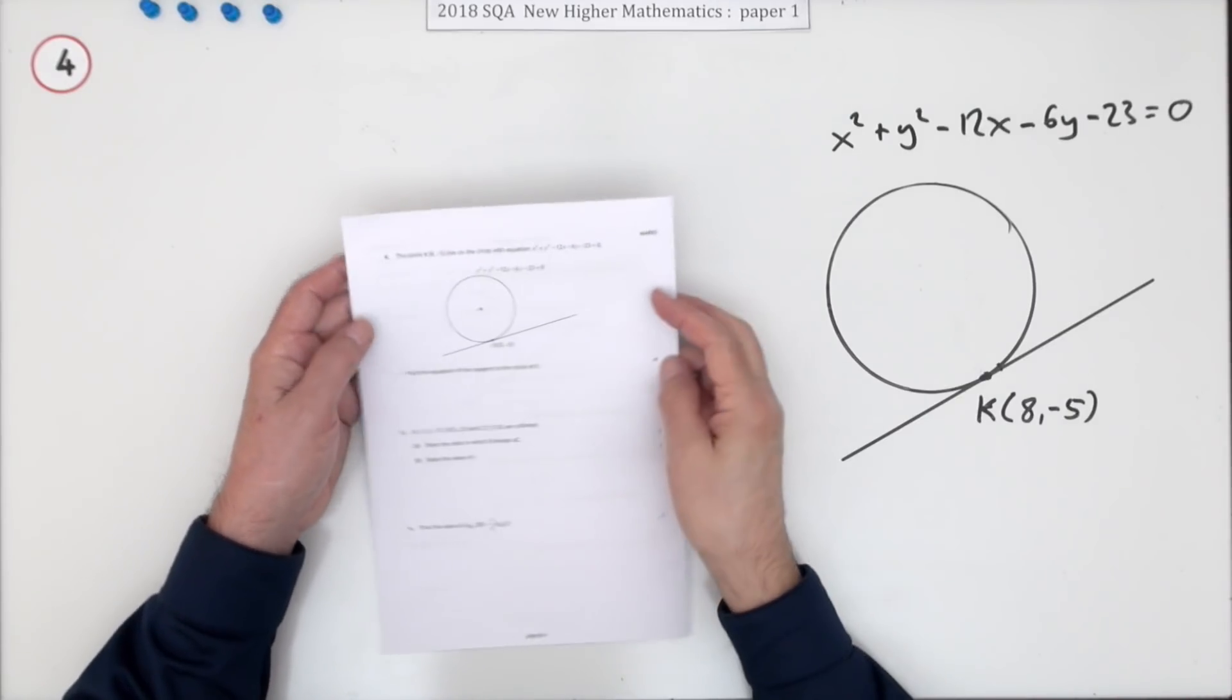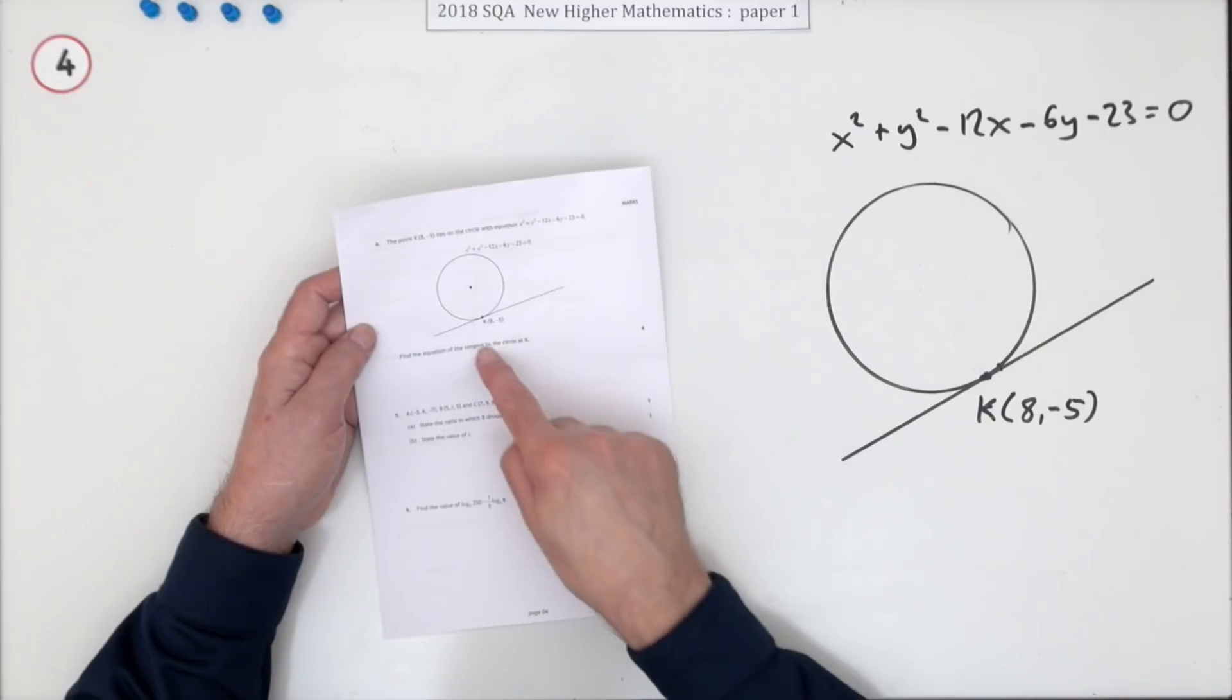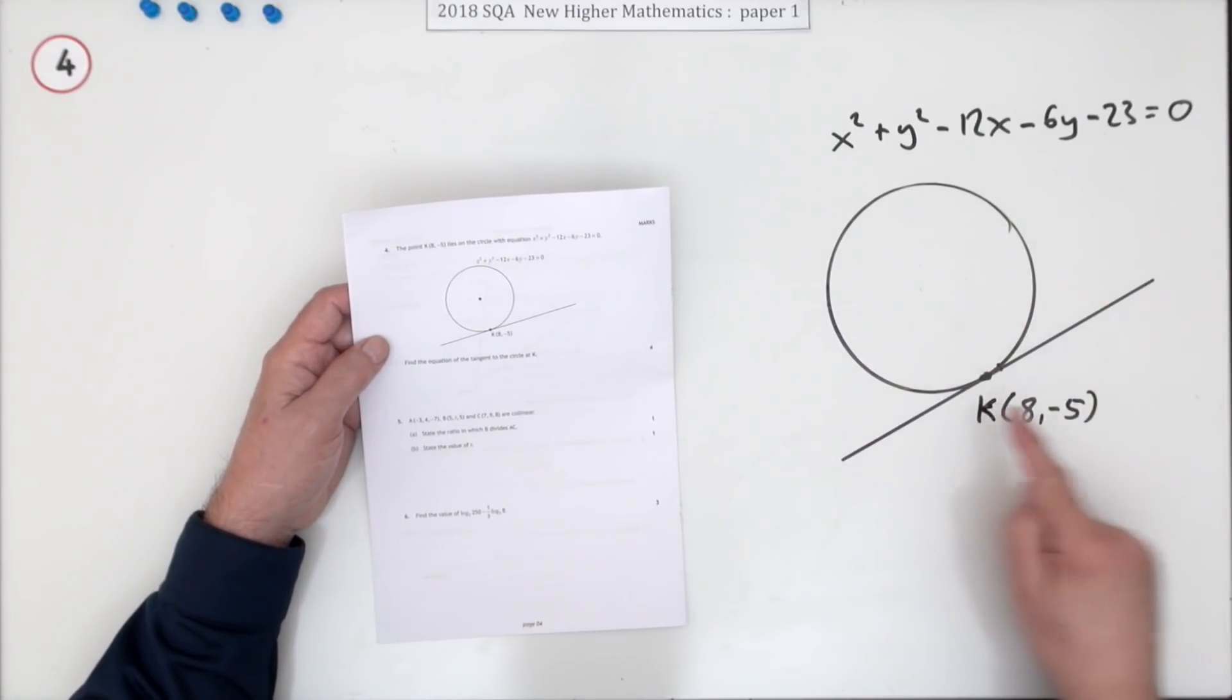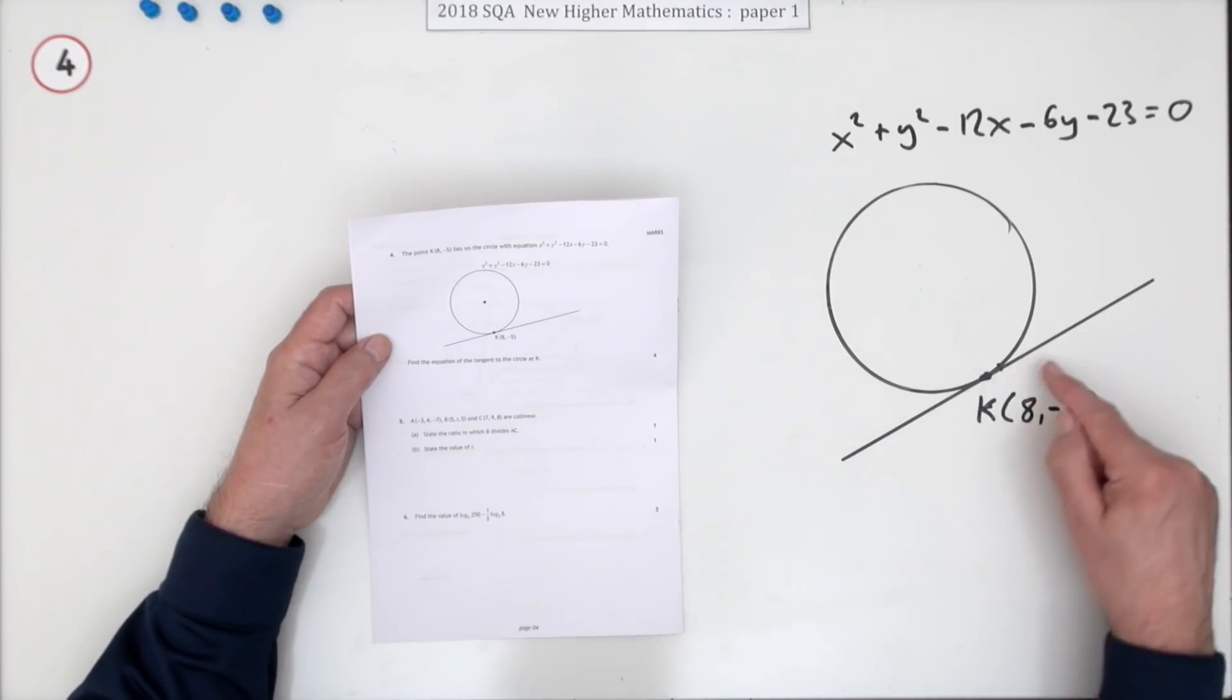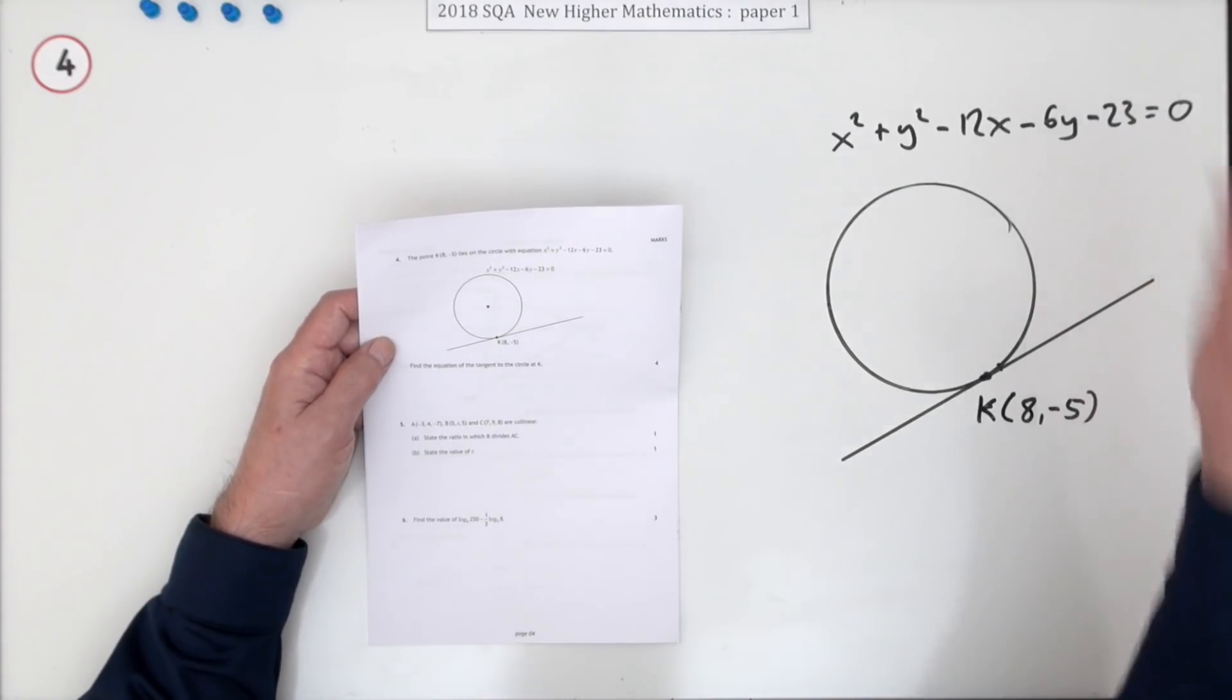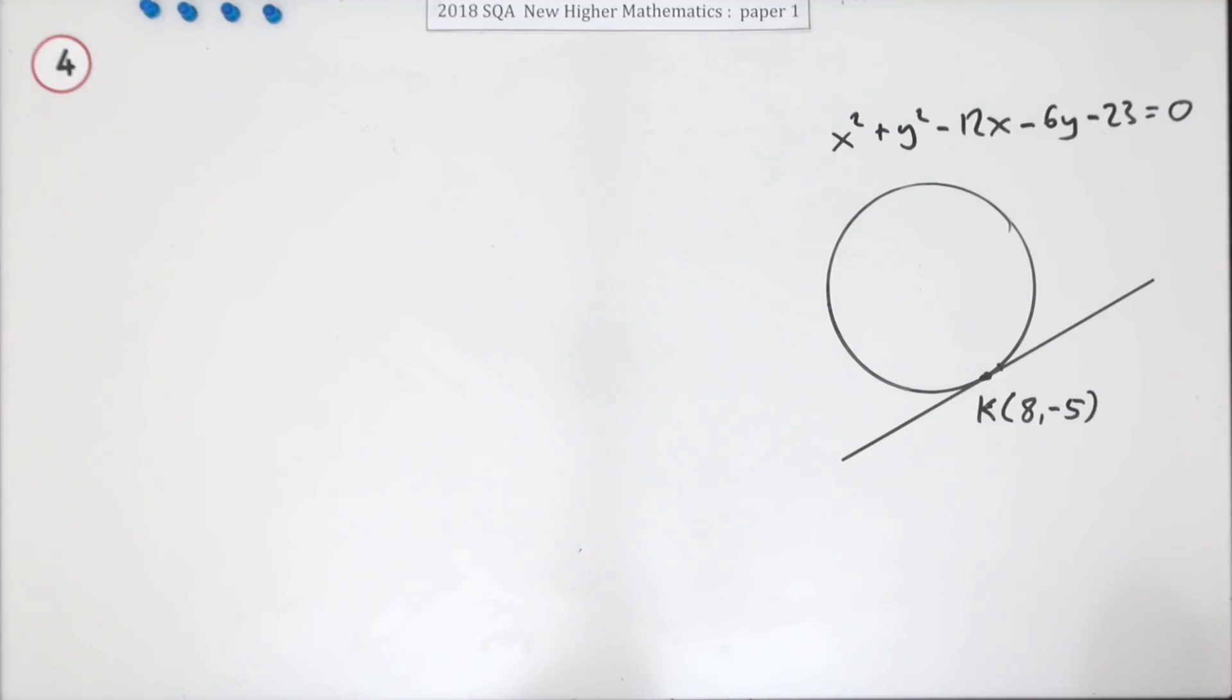Number four from the 2018 SQA Higher Maths paper one. Find the equation of the tangent to a circle. You're given a circle with a point on it, K(8, -5), to get the equation of the tangent to the circle at that point. You've got the equation of the circle here in the expanded form, in the general form.